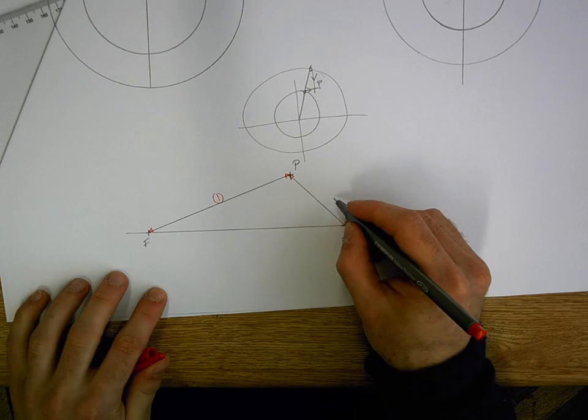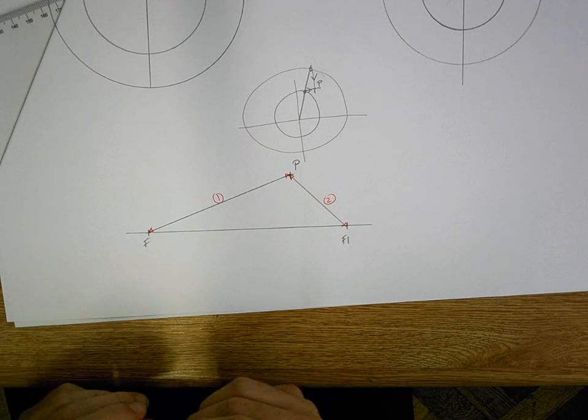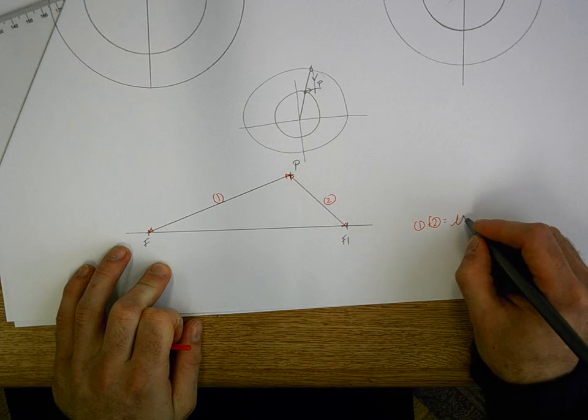So we're taking distance number one, distance number two, and we're adding them together. Now when you add them together, they equal your major axis.